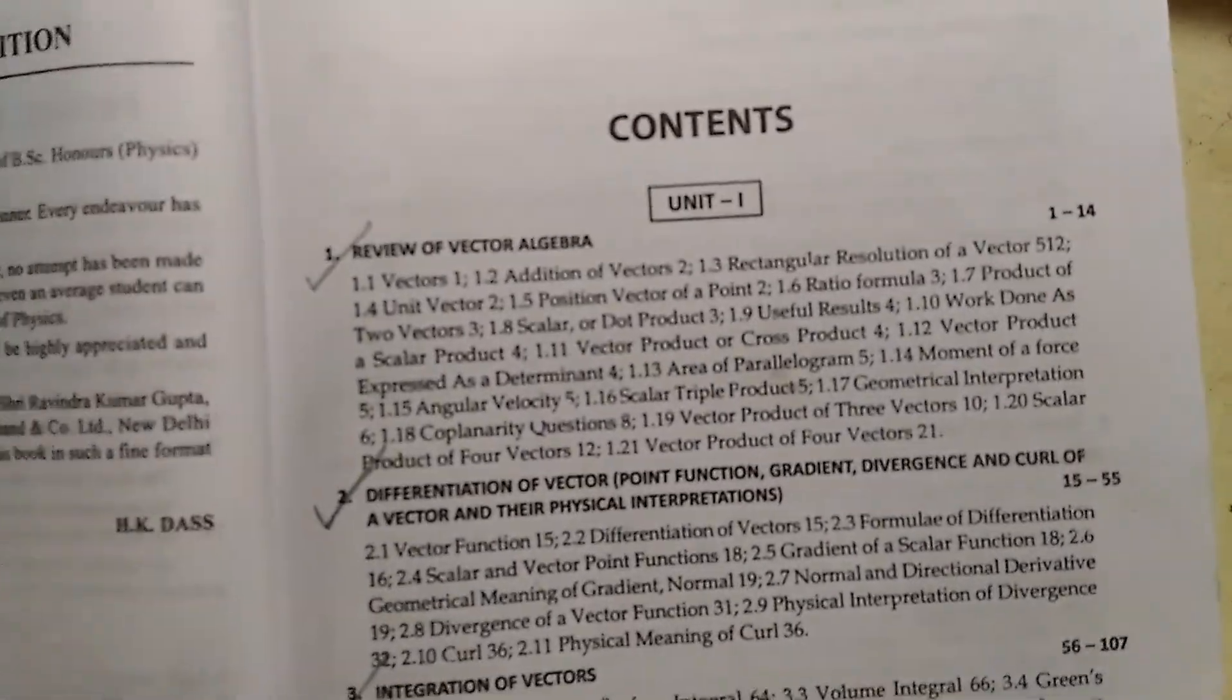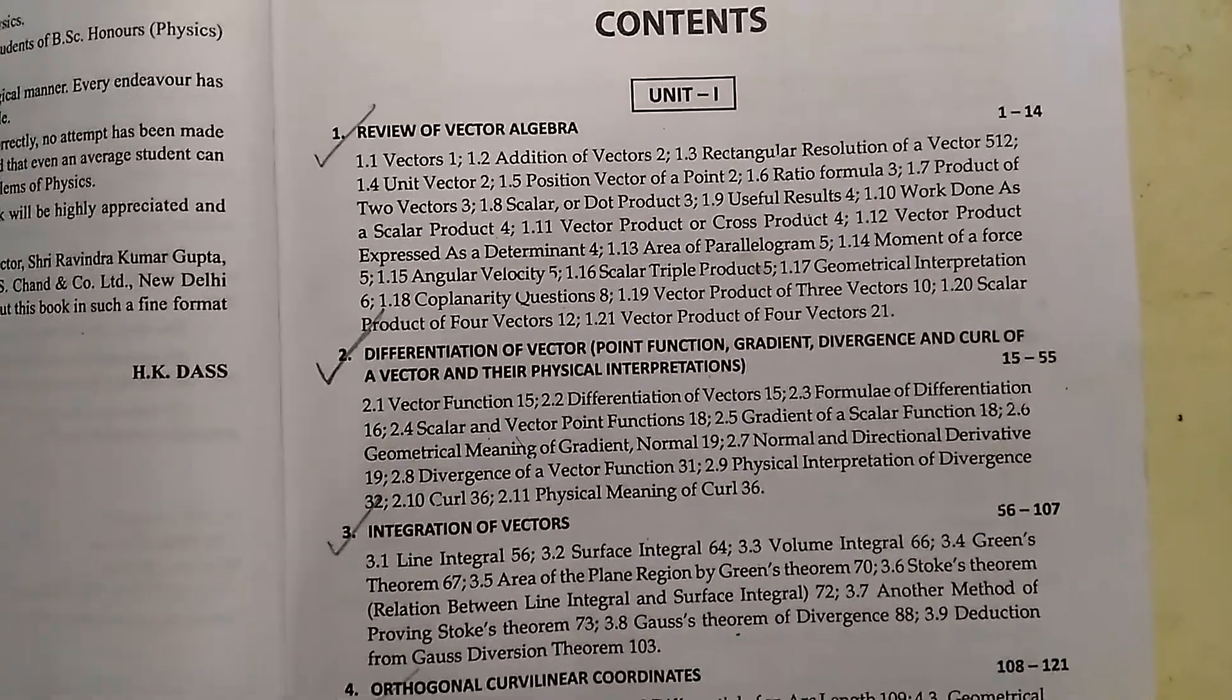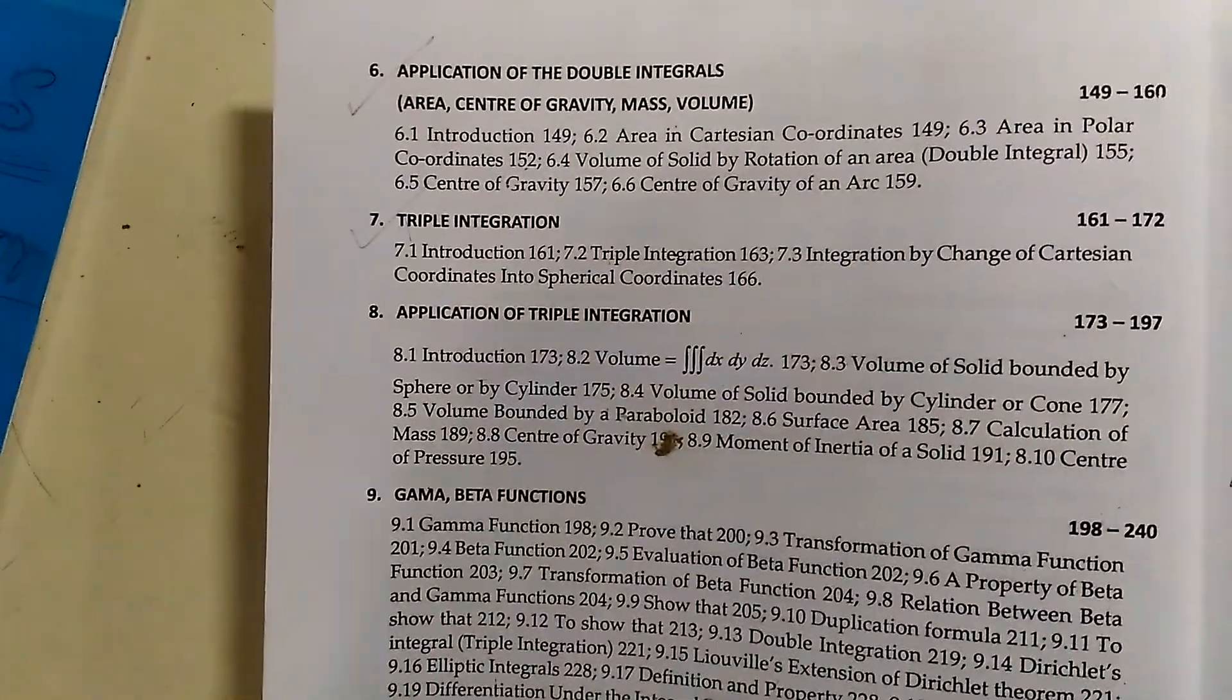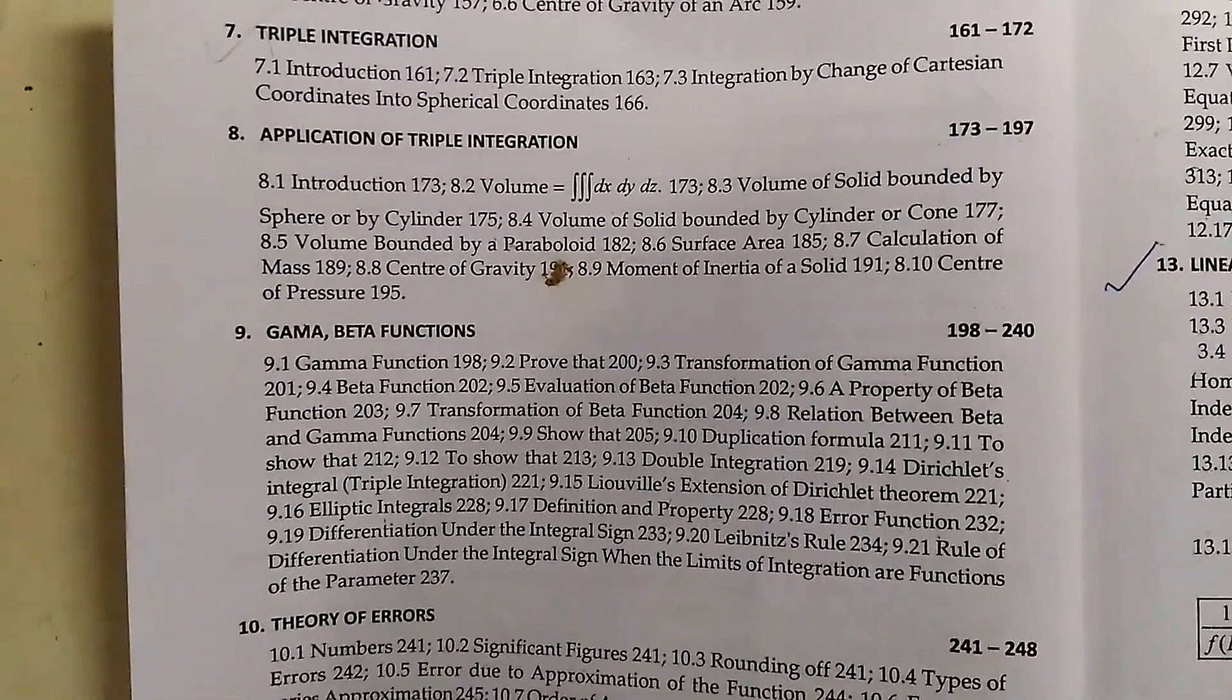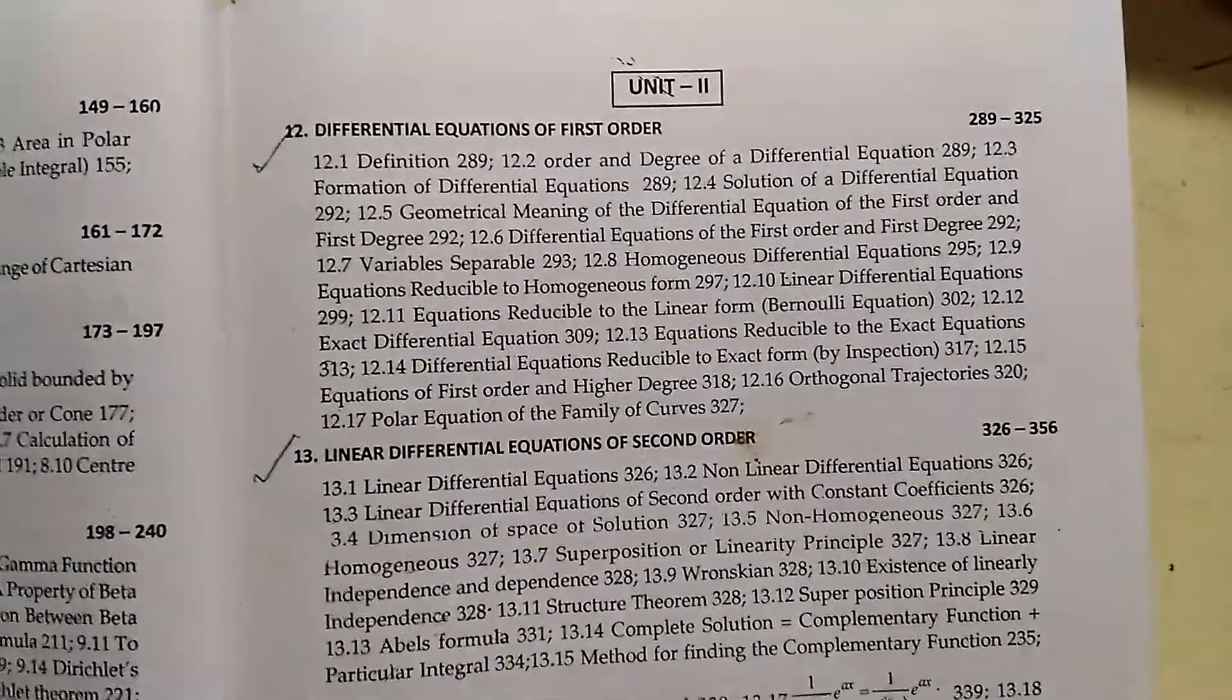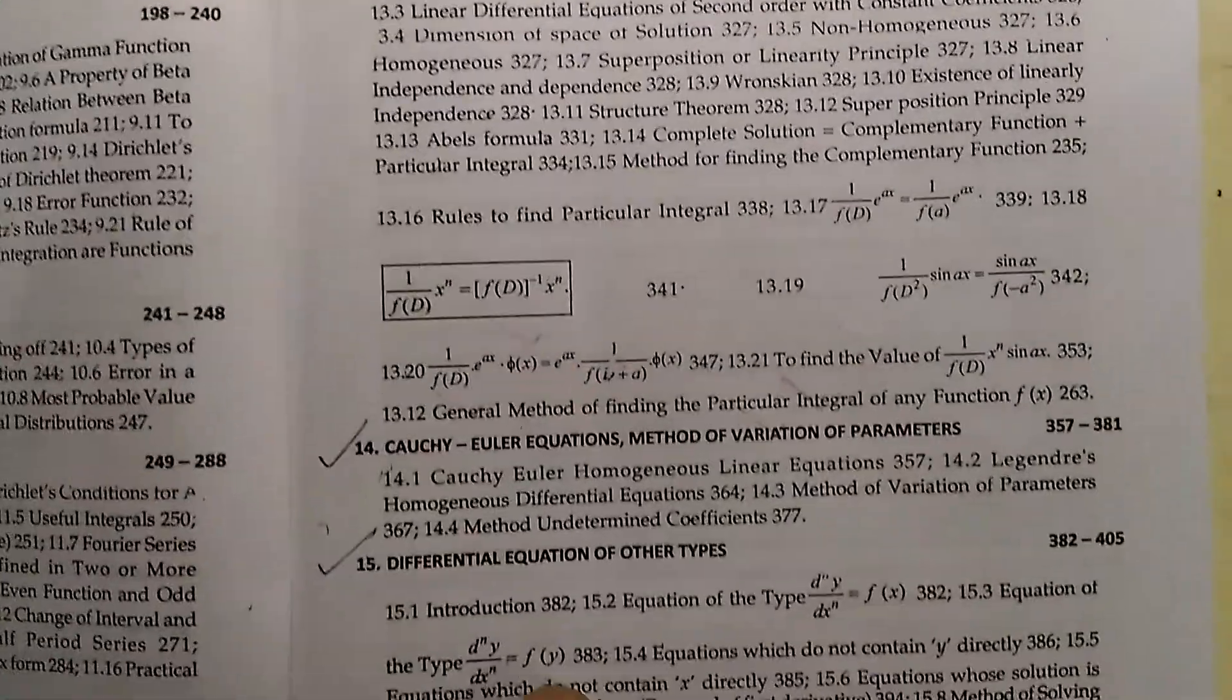First I am going to show you the contents of this book. There are lots of things given in this book like review of vector algebra, differentiation of vectors, integration of vectors, and orthogonal curvilinear coordinates, then double integrals, applications of double integrals, triple integrals, application of triple integral, gamma function, beta function, theory of errors, Fourier series.